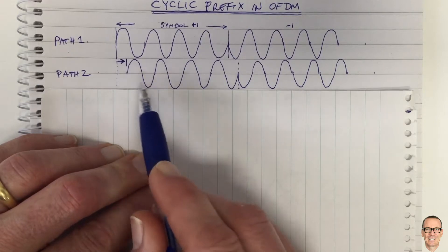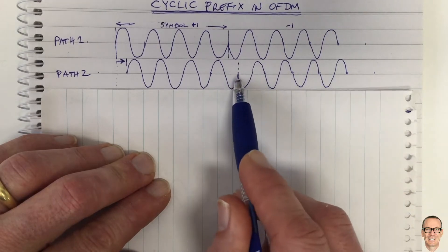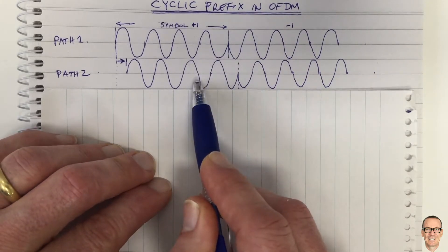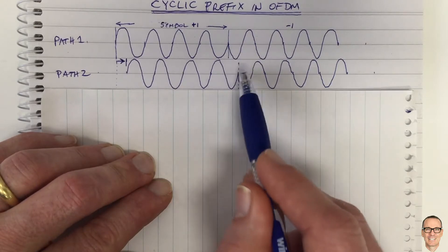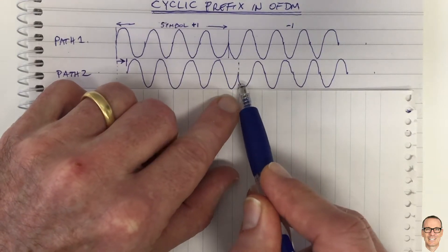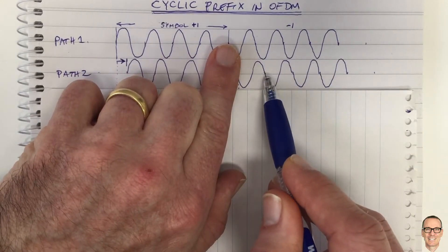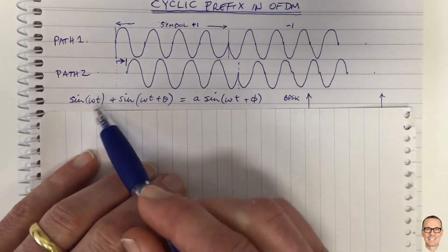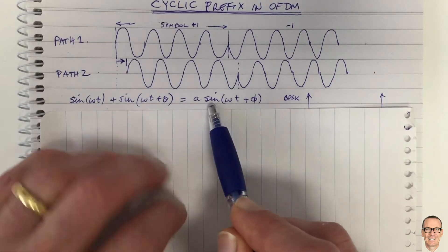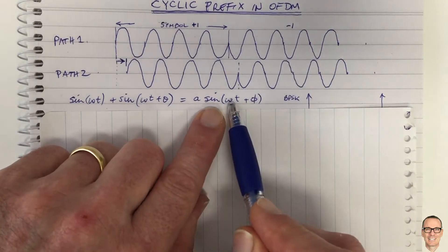This second path has a delay, which means the transition point in that path comes at a later time. Since these two add up in the air, what you receive is the addition of the two waveforms. Looking at this transition point, it causes a discontinuity in the second symbol. For the rest of the signal, it is one sinusoid plus a delayed sinusoid — and a sinusoid plus a sinusoid at the same frequency with a different phase equals another sinusoid at that same frequency.